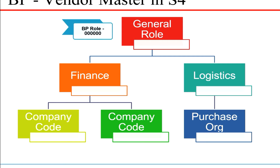For general data, there is a standard role called BP0000, and by default when you are creating a vendor, the BP00 role is invoked. Under this role you are essentially creating the vendor-related information which is address information. When you are creating the vendor in the finance organization to post financial entries, you use a role called FLVN00.